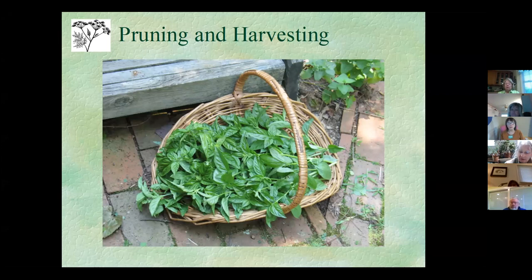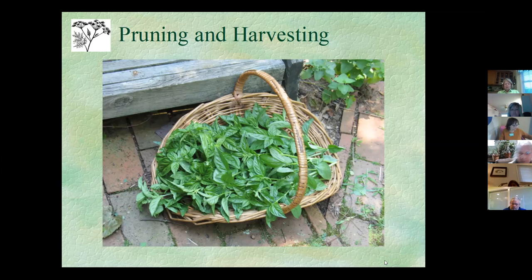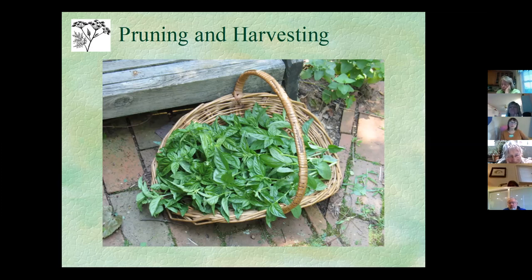For chives, when I prune them I cut them all the way back to the base of the plant. If you just take the tips, you'll get a little brown stub where you've cut, which doesn't look as nice. For parsley, harvest the whole stem going back to the ground, and always harvest from the outside since parsley grows from the inside. Leave the inner stems to keep growing.